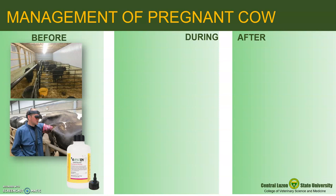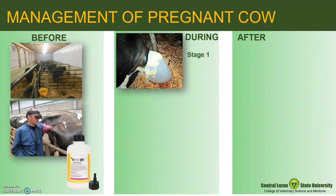During calving, assistance should be made only when necessary. However, it is important to know the 3 stages of parturition including their duration to know whether the process is still normal or not. The first is the dilation of the cervix — fetal membranes are pushed into the cervix, the water bag comes out and hangs from the vulva, which may rupture anytime. This stage takes 30 to 110 minutes depending on the intensity of labor pain.